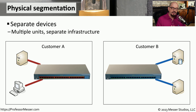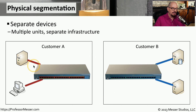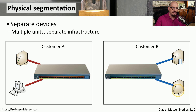If you wanted to create a segmentation with an air gap, you would use separate devices — for example, two switches. On one switch is customer A, and on the other switch is customer B. You'll notice there's no connectivity between these two networks, which means that none of the devices on the customer A network would be able to communicate with the devices on the customer B network, and vice versa.